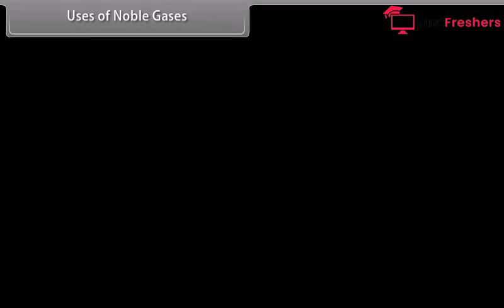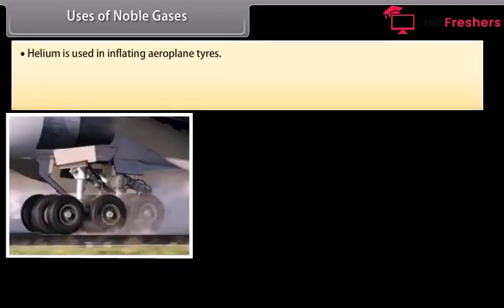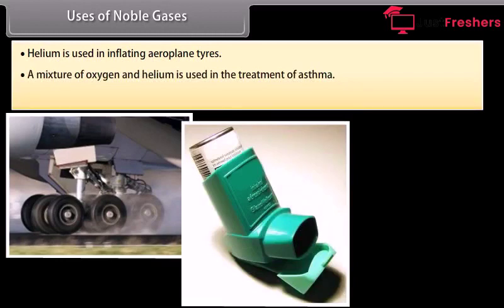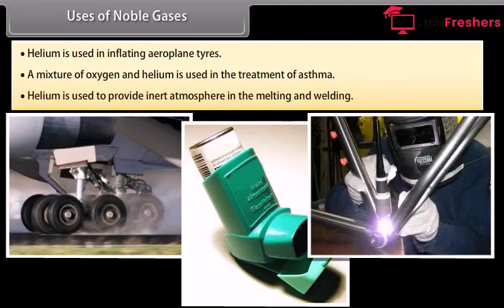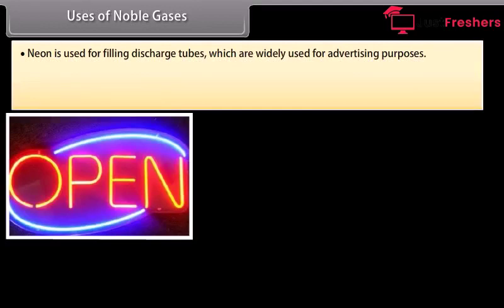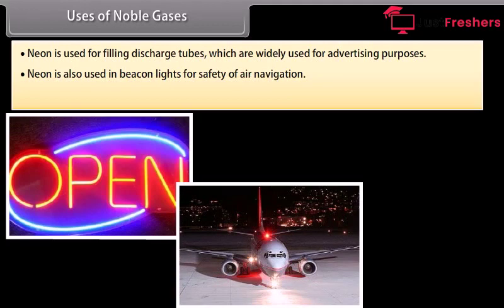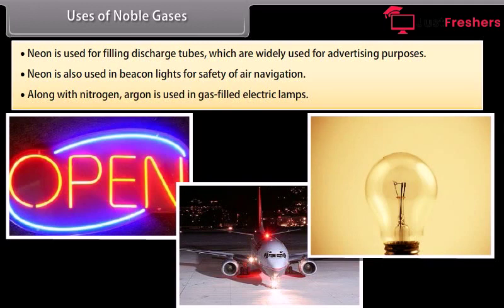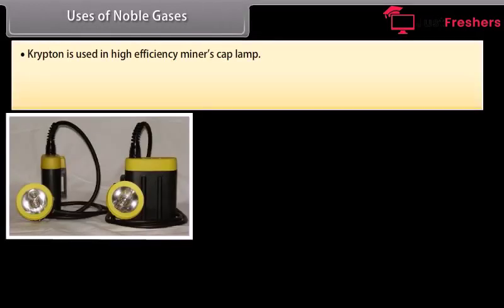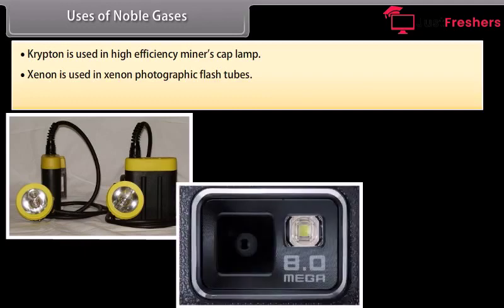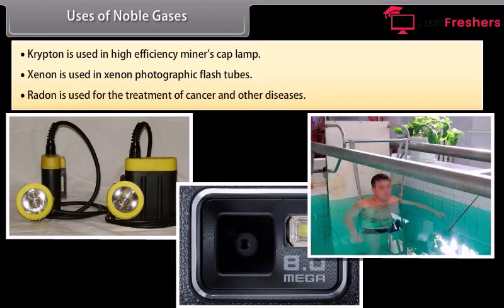Because of the lightness of helium, it is used in inflating aeroplane tyres. A mixture of oxygen and helium is used in treatment of asthma. Helium is used to provide inert atmosphere in melting and welding. Neon is used for filling discharge tubes which have characteristic colours, widely used for advertising purposes, and also in beacon lights for safety of air navigation. Argon, along with nitrogen, is used in gas-filled electric lamps. Krypton is used in high-efficiency lamps, xenon is used in xenon photographic flash tubes, and radon is used for the treatment of cancer and other diseases.